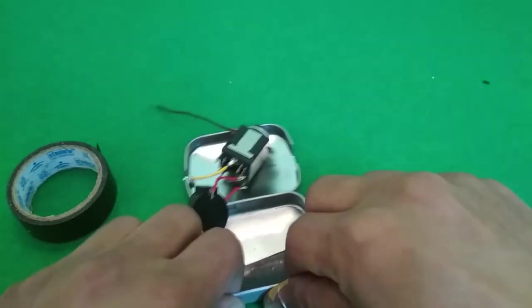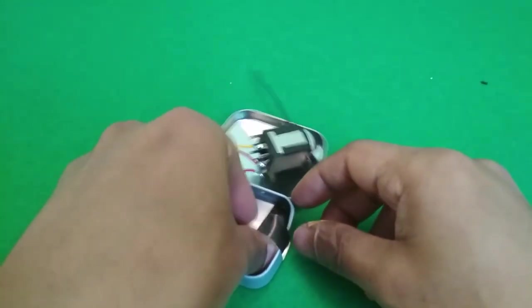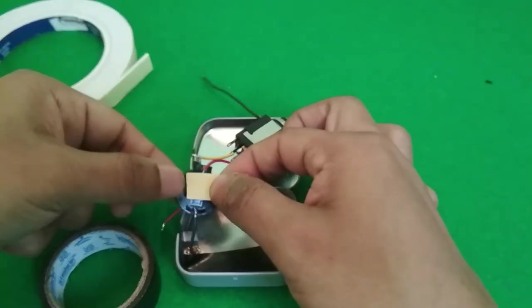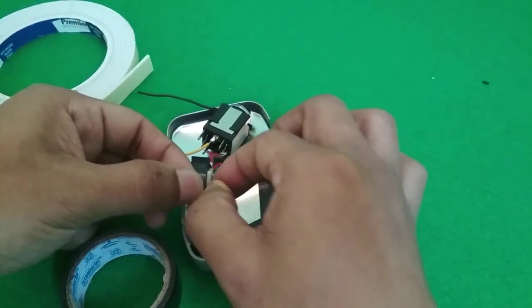Now I'm putting down some insulating tape to make sure I don't short anything to ground accidentally, and then I'll mount the battery holder with some double-sided tape.